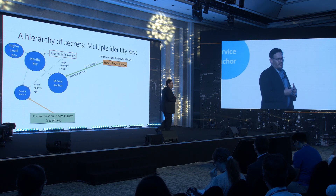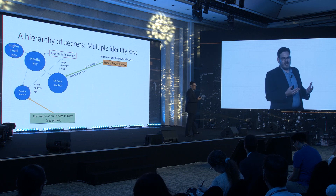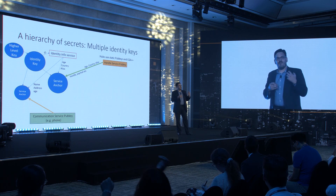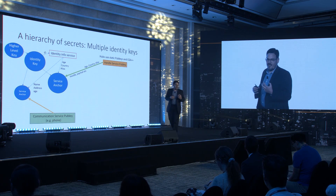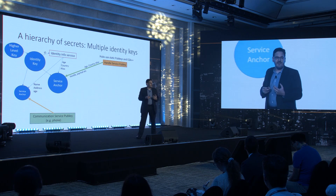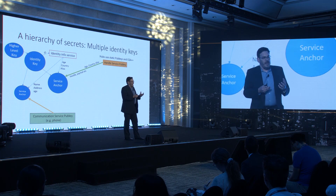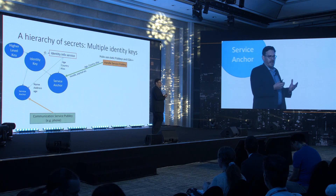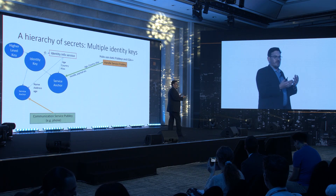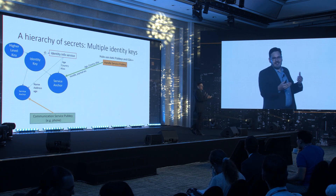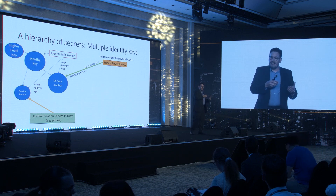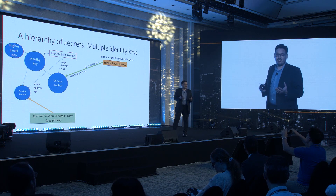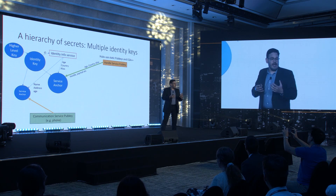Because the user's information service holds a superset of that user's information, that user can now create separate service anchors which are configured each for classes of service that require different subsets of their overall persona. In this way, a service anchor could be created and used to define a wallet handle, which a wallet service provider would be allowed to create with verification of the user's age and country of residence. But the same identity key and identity information service can be used to establish a separate service anchor, which might be for a telecommunications device activation, which requires more information such as a name, an address, and an age.